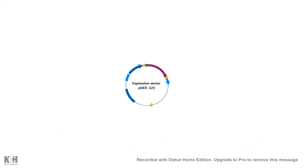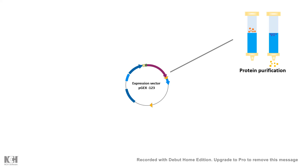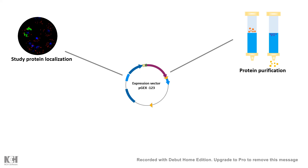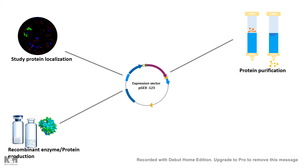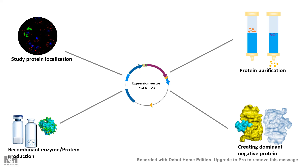It is called the expression vector. Expression vectors could be used for several reasons: to purify a specific protein by first expressing it in bacteria or in a mammalian cell followed by purification, to study protein localization in a cell, and also to make recombinant proteins or enzymes such as insulin.